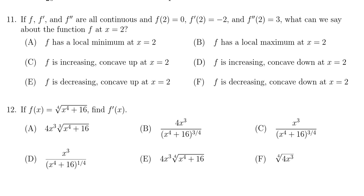In this video we provide the solution to question number 11 for the practice final exam for math 1210, in which case we're told that if a function f, its first derivative, and its second derivative are all continuous on their domains, and if f of 2 equals 0, f prime of 2 equals negative 2, and f double prime of 2 equals 3, what can we say about the function happening at x equals 2?